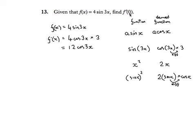And the final step, replace x by 0. So f dashed of 0 is the derived function evaluated when x equals 0, which will be 12 times the cosine of 3 times 0, which is just 0.